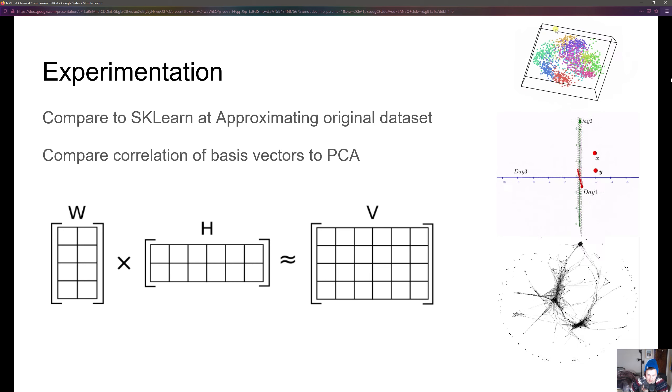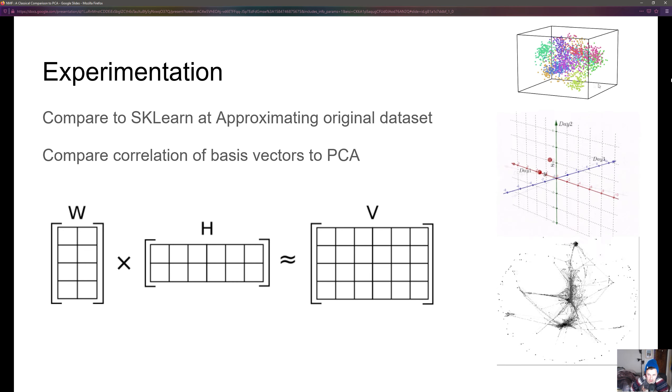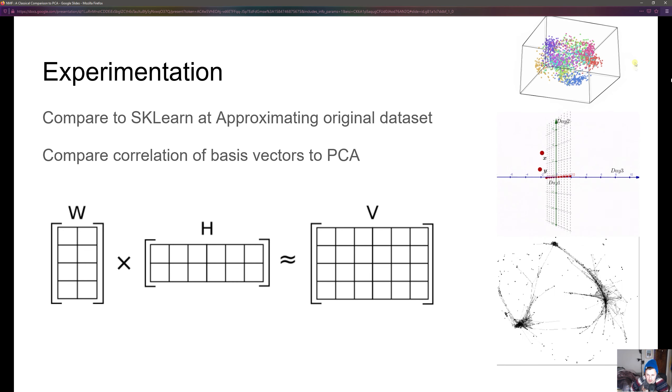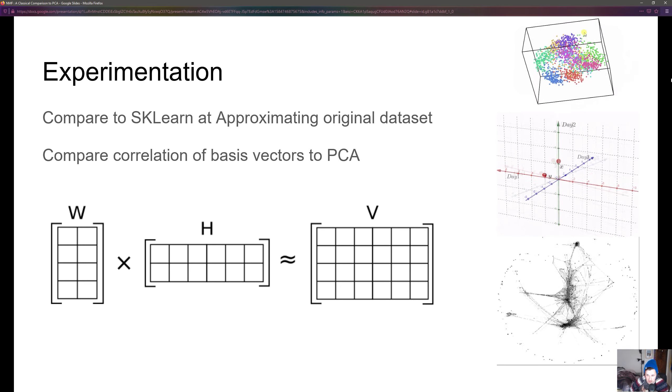So NMF, what it really gives us is two matrices W and H that when multiplied together can approximate our original input matrix V. W contains our basis vectors and H contains the activations for NMF.